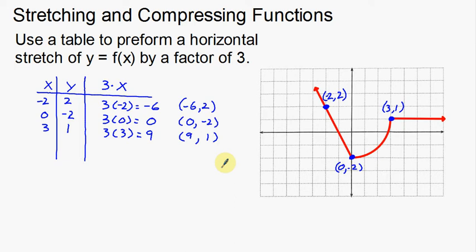Let's see if I have enough space. I can plot (-6, 2) — that point moved quite a ways over. And (0, -2) stays in the same spot. But (9, 1) — counting out to 9 — that's way over here, almost off my video. That was probably a bad point to use. Sometimes a chosen point goes off the grid and doesn't fit, so you've got to go back and find something else.